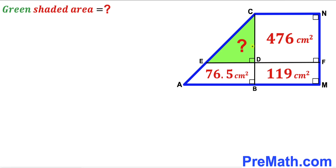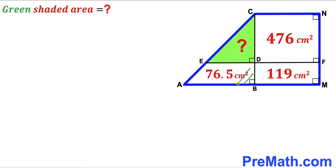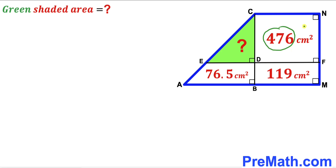Welcome to pre-math. In this video we have got this quadrilateral AMNC that consists of a rectangle CNFT, another rectangle DFMB, a trapezoid EDBA, and finally this green shaded triangle CDE. The area of the bigger rectangle is 476 cm², the area of the smaller rectangle is 119 cm², and the area of the trapezoid is 76.5 cm².